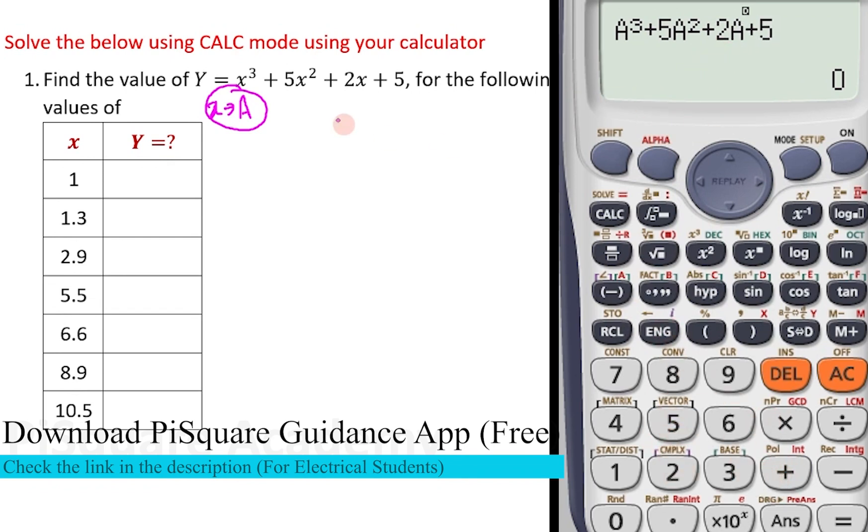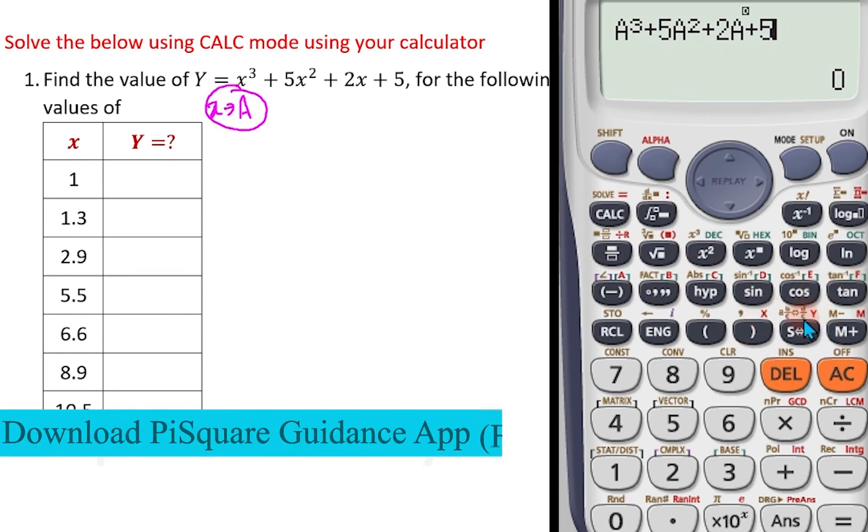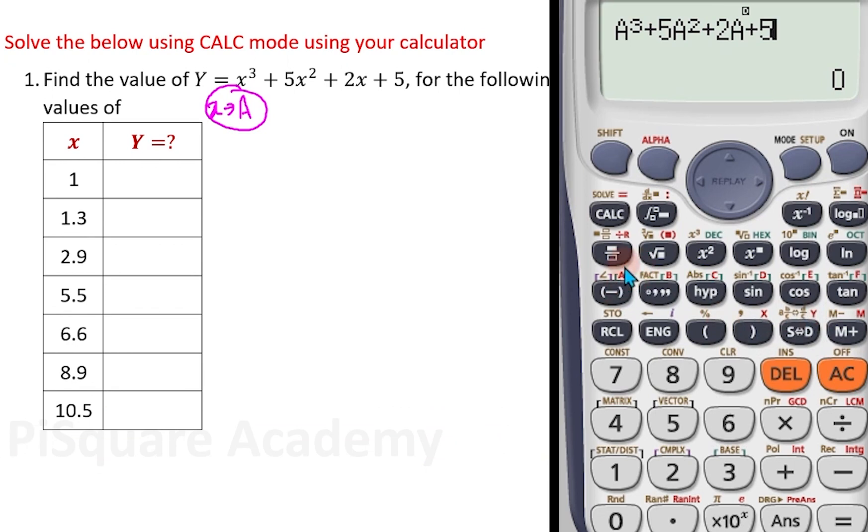Plus 5. That's it. So I entered whatever the equation we have here, I entered just the same equation. But in place of x, I kept a. You can keep b, you can keep c, you can keep d, you can keep e, f, you can keep even x here. x is also here. Or maybe y, anything. I am just taking a here. So this one is exactly entered here.